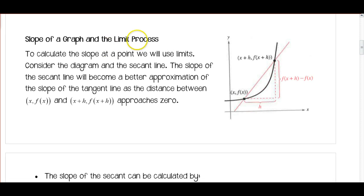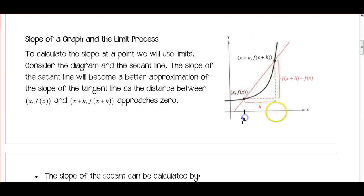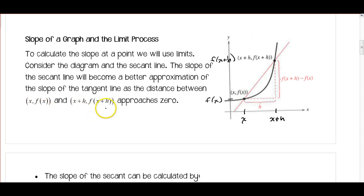Now let's look at the slope of a graph using the limit process. We've been talking about limits, and here we're actually going to apply them to calculate the slope at a point. Consider the diagram and the secant line — a secant is a line that goes through two points on a curve. This secant line goes through the point (x, f(x)) at the bottom, and then a point where the x-value is h units away, so x plus h. The y-coordinate of that second point is f(x+h).